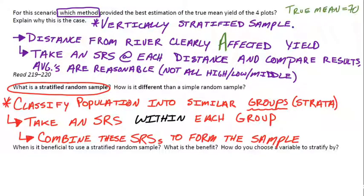A simple random sample, or SRS, is the most basic kind of random sample we can take. Every group of size N has an equal chance of being selected. A stratified random sample is a little more specific — we sort the population into groups and then do an SRS within each one. So a stratified random sample is actually more advanced than a simple random sample; it contains simple random samples within the groups inside it.